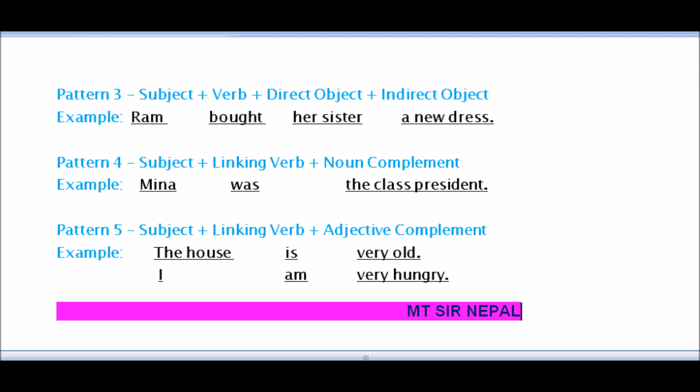Pattern 5 is subject plus linking verb plus adjective complement. Example: 'The house is very old.' Another example: 'I am very hungry.' This uses an adjective complement.